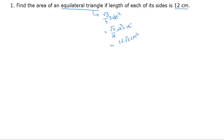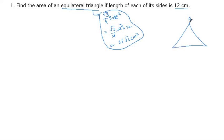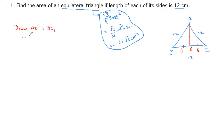I will do it in another way to show you. I will draw the triangle. D is 12, this side is 12, this side is 12. Then we draw AD perpendicular to BC. In an equilateral triangle, the perpendicular will bisect the base, so BD equals DC equals 6 cm.